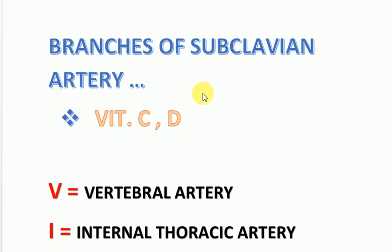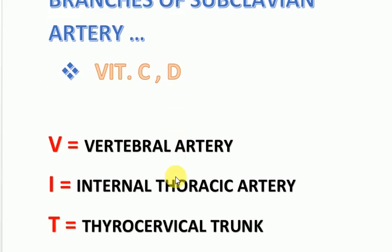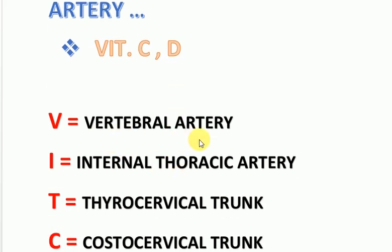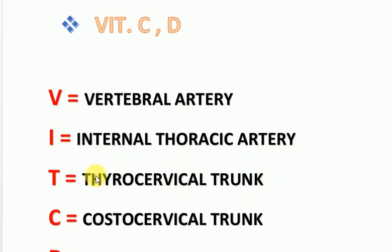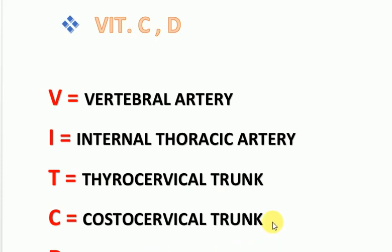To memorize the branches of the subclavian artery, we use the mnemonic 'Vitamin CD': V for Vertebral artery, I for Internal thoracic artery, T for Thyrocervical trunk, C for Costocervical trunk, and D for Dorsal scapular artery.